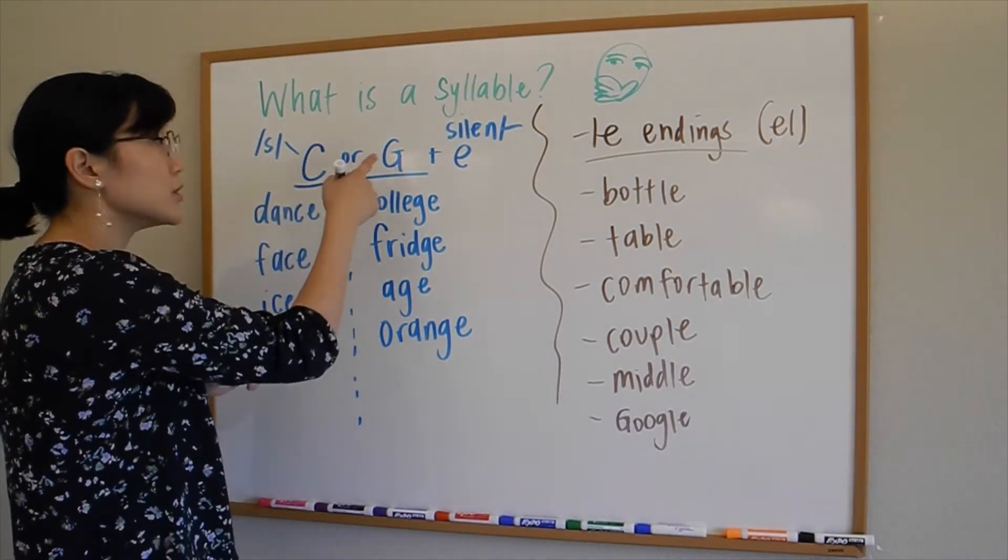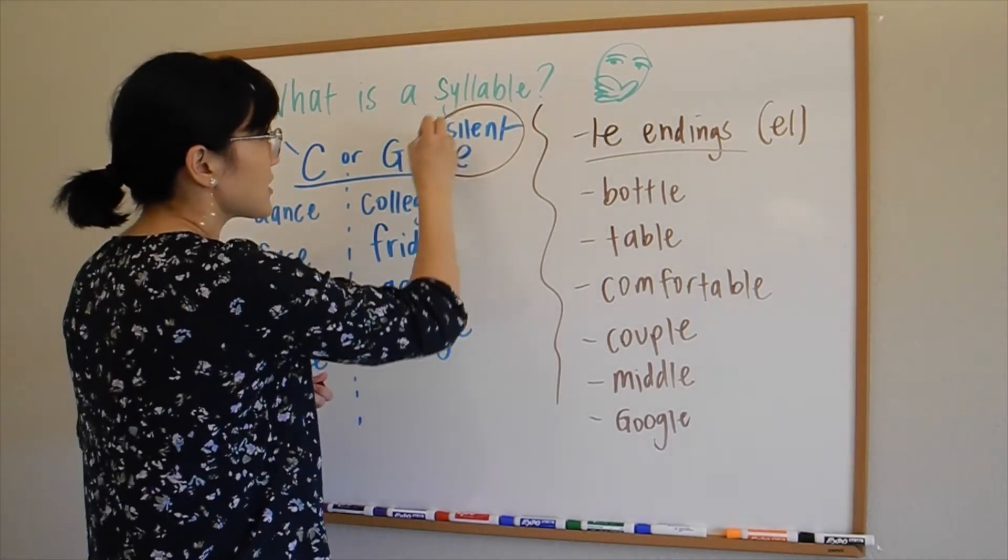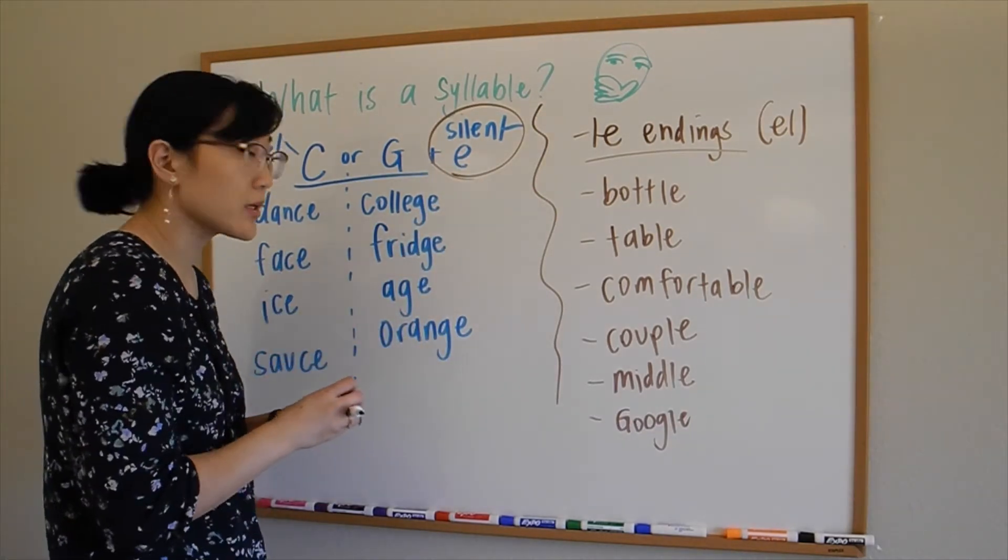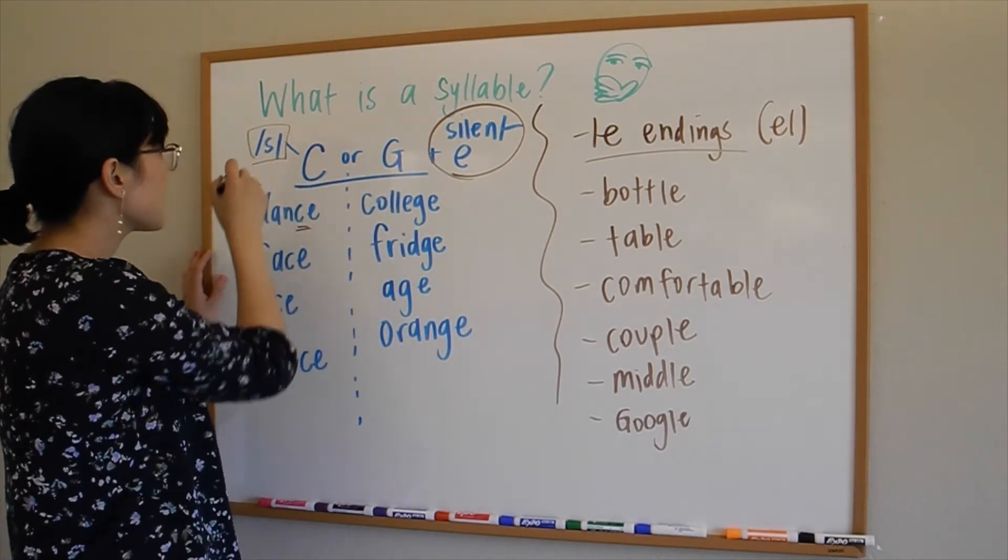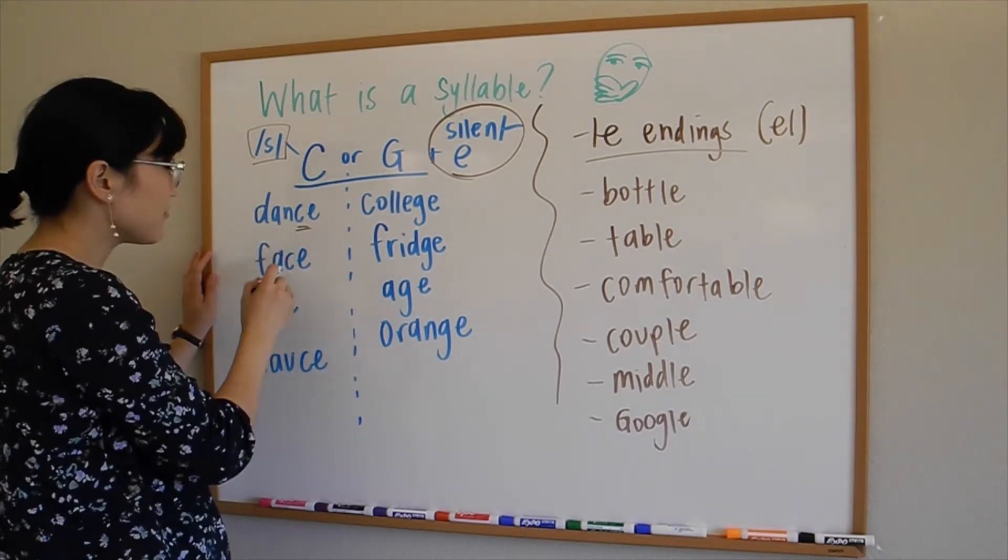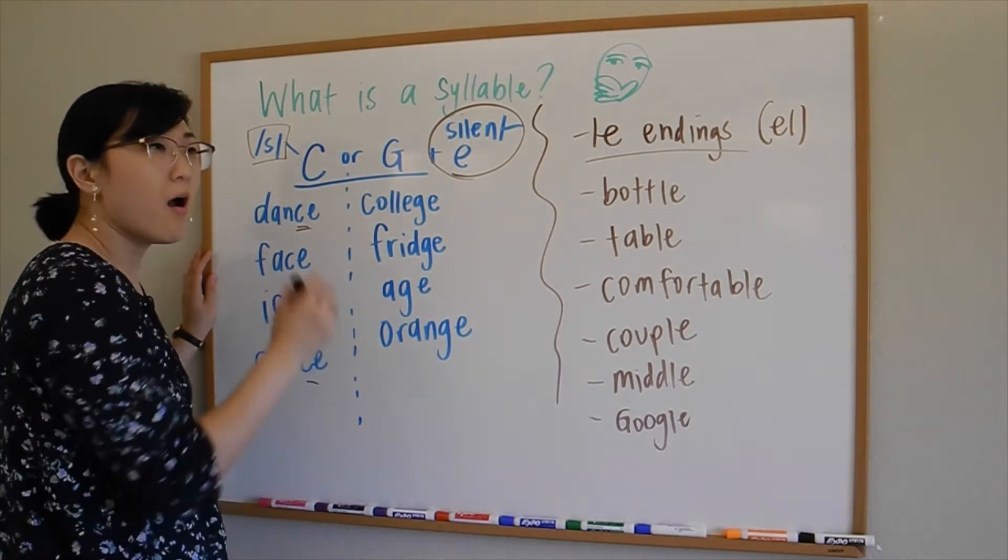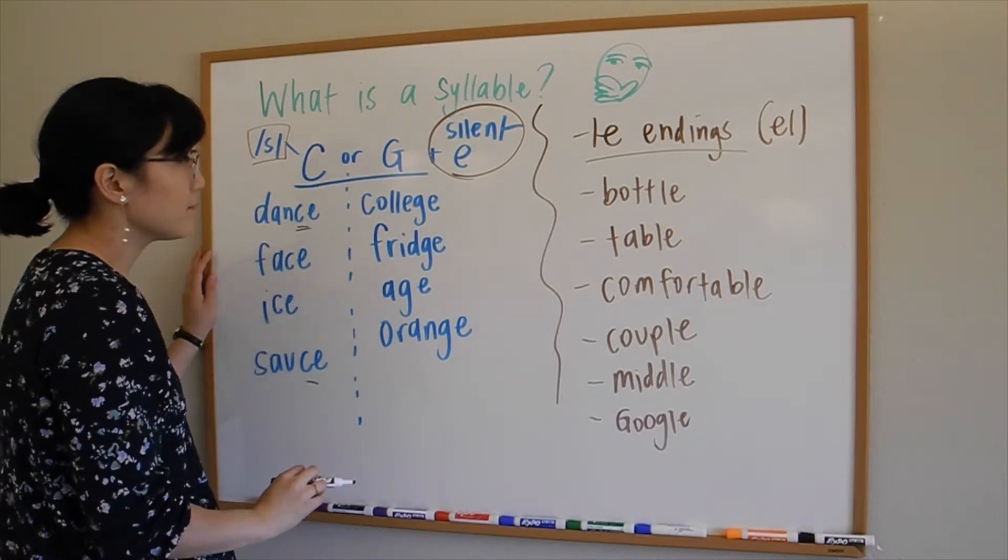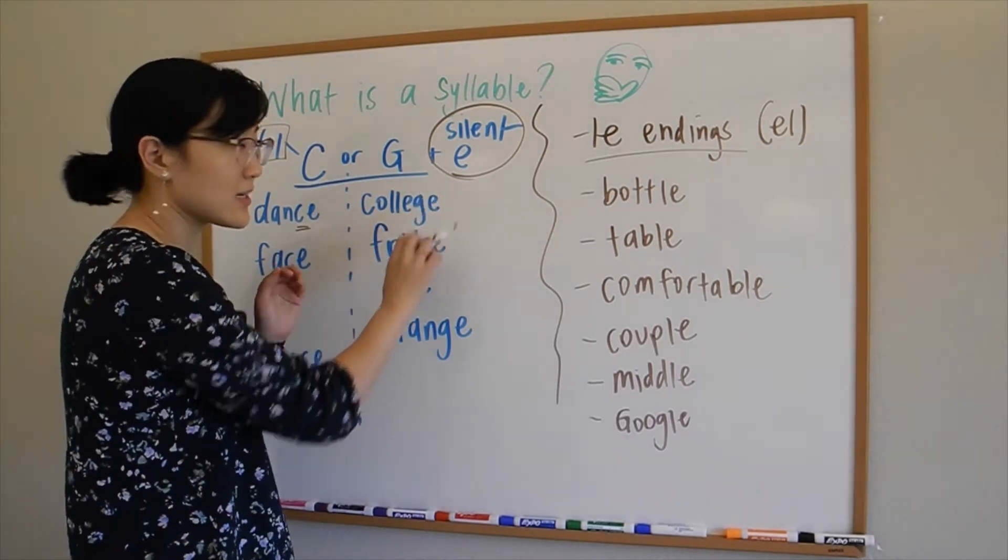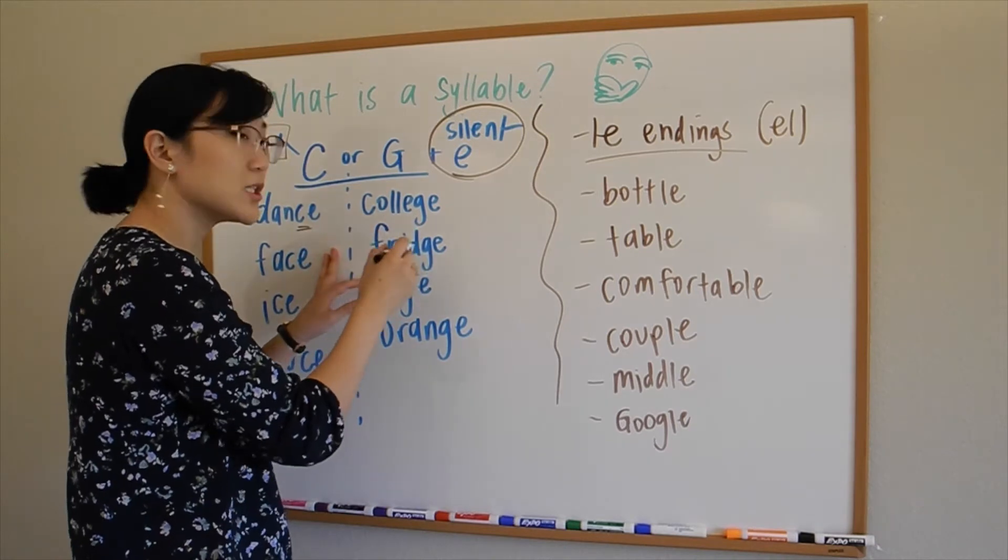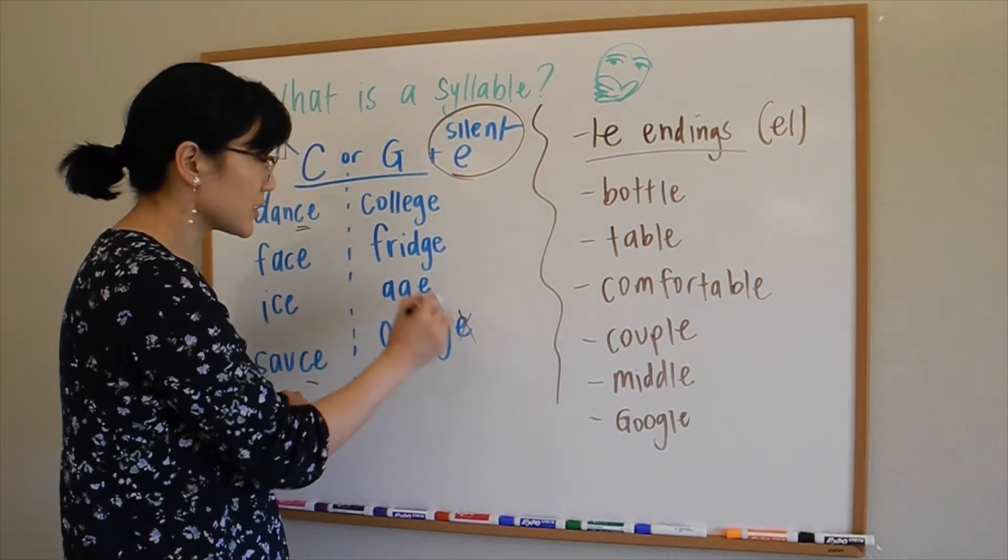Words that end in 'c' or 'g' followed by an 'e', as in these examples in blue, the 'e' is actually silent. If it ends in 'c' followed by an 'e', it takes on this 's' sound. For example: dance, face, ice, sauce—like applesauce. All of these have an 's' sound. Whereas the words that end in 'g' have a 'j' sound. We don't pronounce this 'e': college, fridge, age, orange. We don't say these 'e's at all.